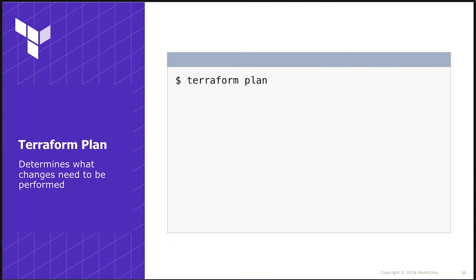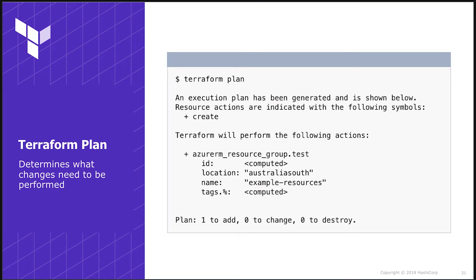Next up is Terraform plan. What Terraform plan does is look at the Terraform configurations which exist locally — in code — and look at the state of the world in Azure, and work out the difference and what changes it will make. So if we run Terraform plan at the moment and the resource group doesn't exist, Terraform will say 'here's what I'm going to do' — in this case, create the resource group. You can optionally save this plan to a file, so if you don't have write permissions to production but someone else does, you can pass them that plan and they can apply it later.